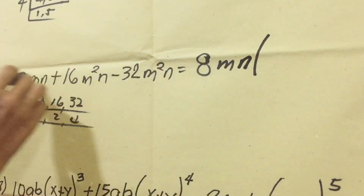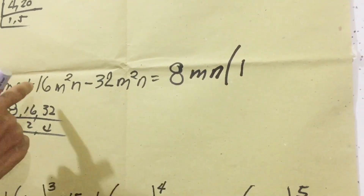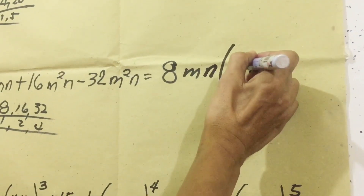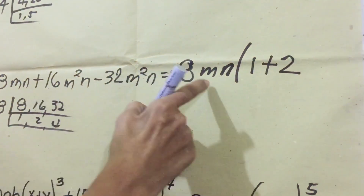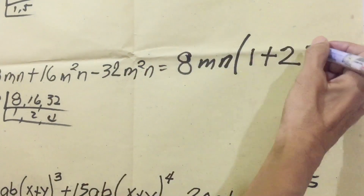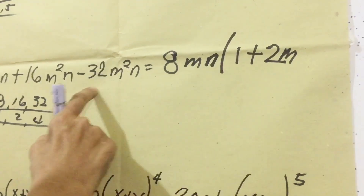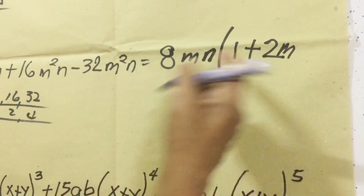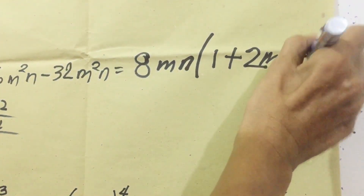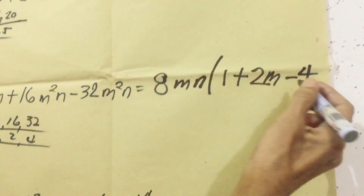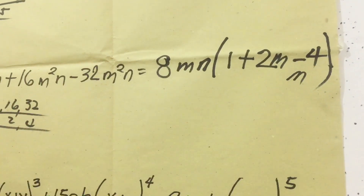Now we divide. 8MN divided by 8MN equals 1. Then 16 divided by 8 is 2, positive. For M: exponent 2 minus 1 leaves M. For N: N divided by N cancels out. For the third term, negative 32 divided by 8 is negative 4. For M: 2 minus 1 leaves M. N cancels out. So the answer is 8MN times (1 + 2M - 4M).